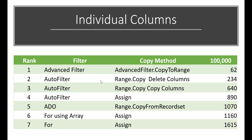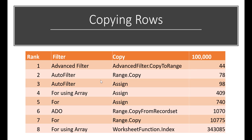Here are some benchmark tests I ran. When using individual columns, I compared the for loop, the for loop with an array, AutoFilter, and ADO (database objects). The Advanced Filter copy-to-range is way faster than all the rest — just 62 milliseconds for 100,000 records, compared to 1,600 milliseconds for the for-assign method. For copying rows, even methods like range copy or copy-from-recordset are slower — the Advanced Filter wins every time.